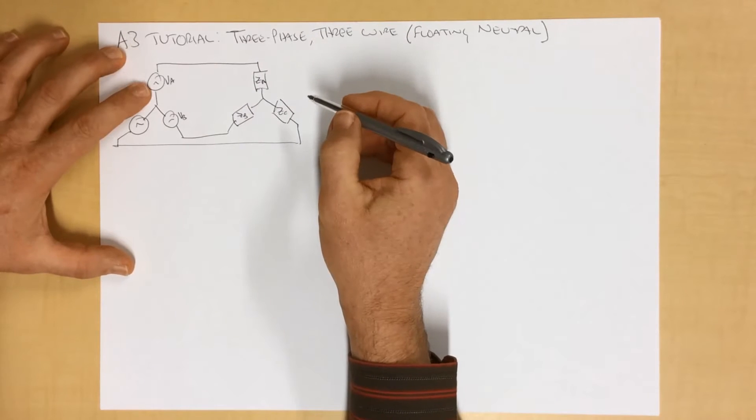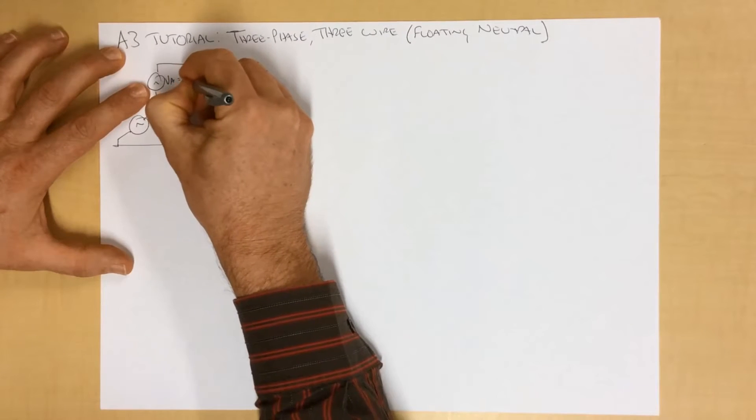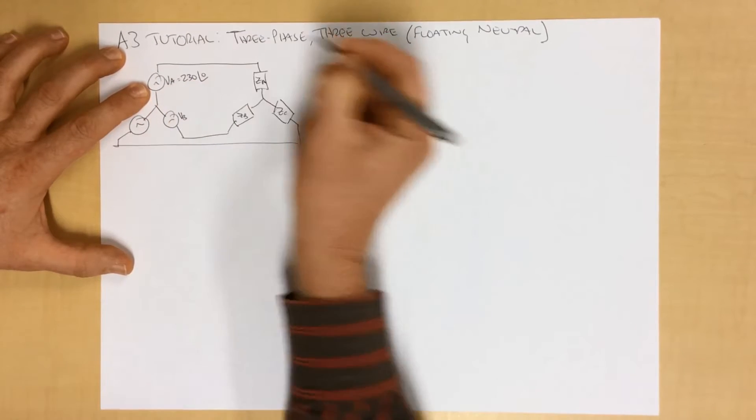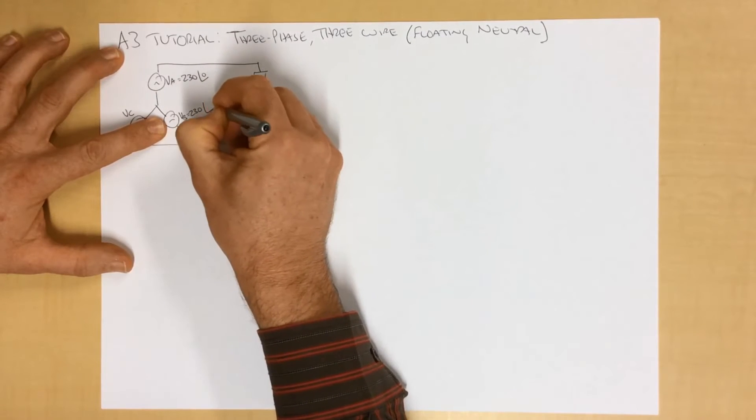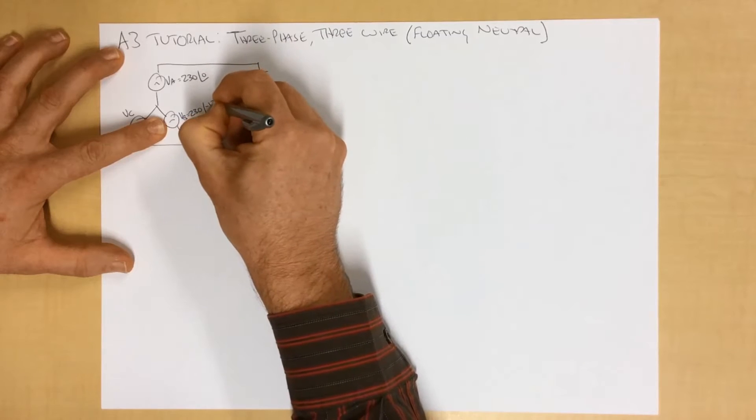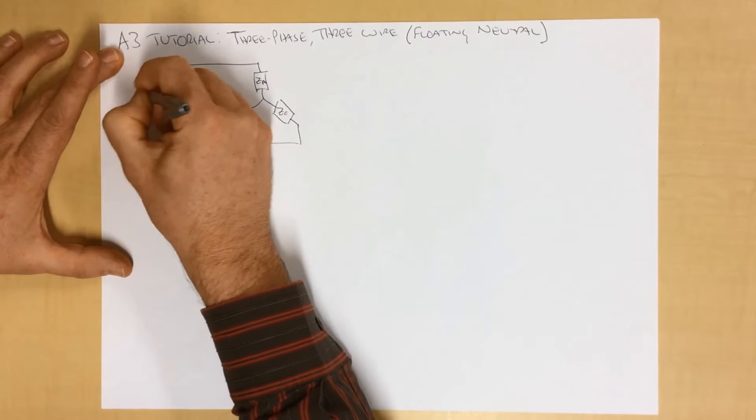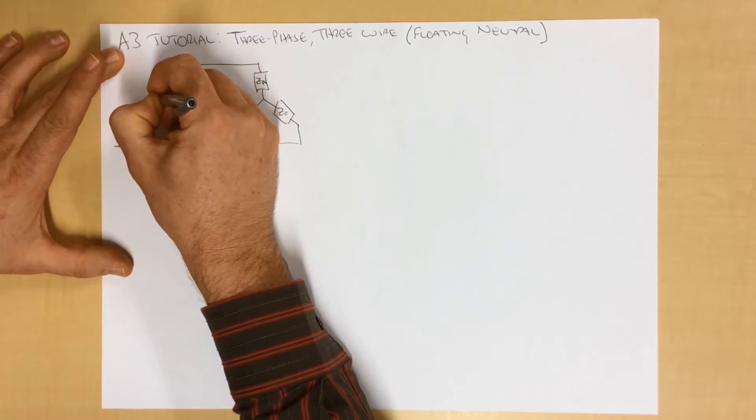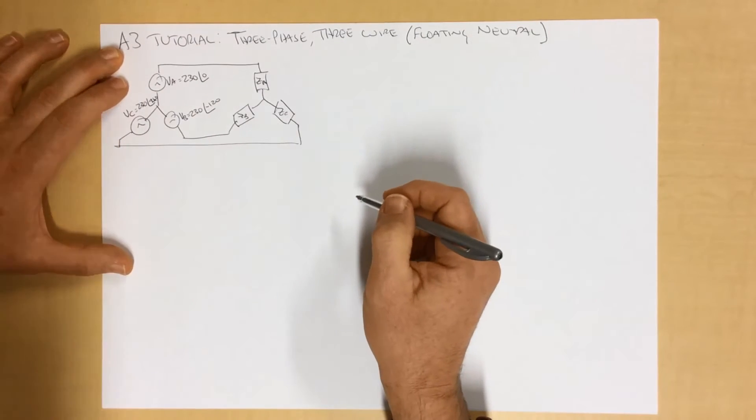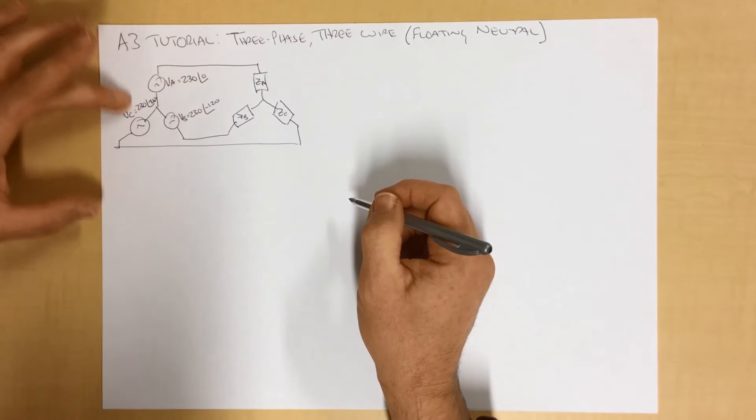VA, we'll call it 230 volts with an angle of zero. We'll say VB is also 230 volts with an angle of minus 120. And VC is also 230 with an angle of minus 240. And so these are our supply voltages here, which in turn are feeding our loads.